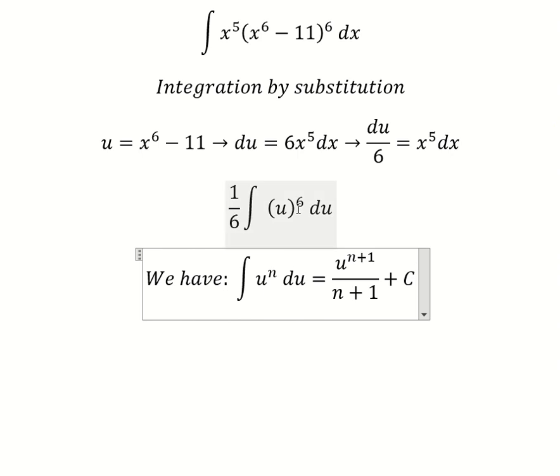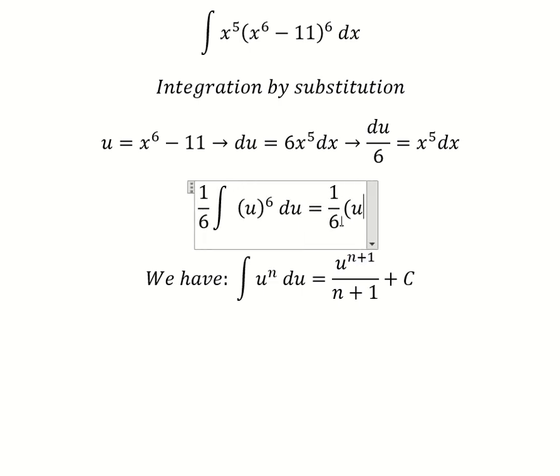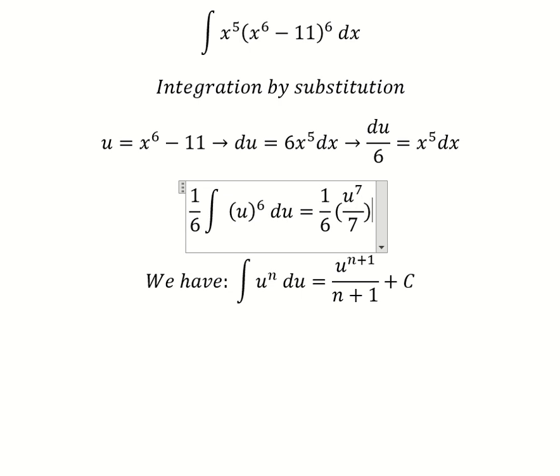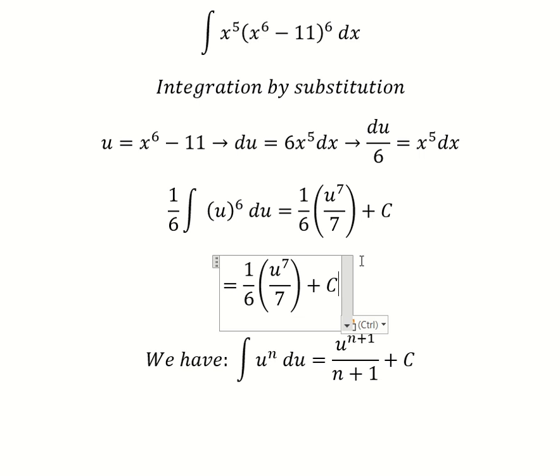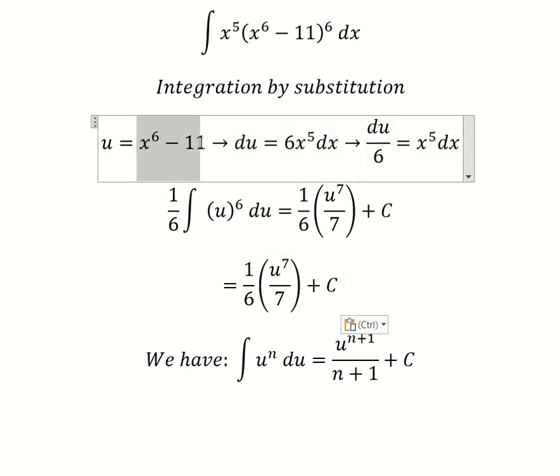Now we put n equals 6 in here. 6 plus 1 gives us 7. So u is x to the 6 minus 11.